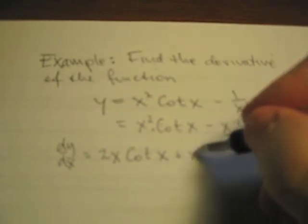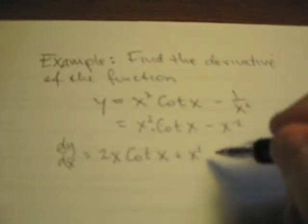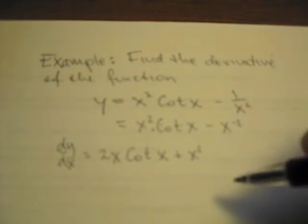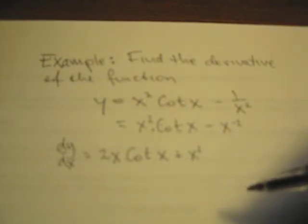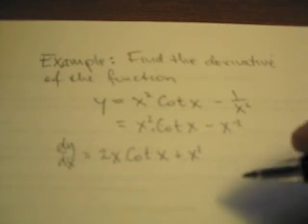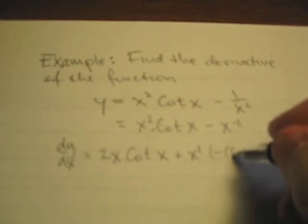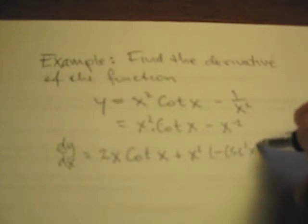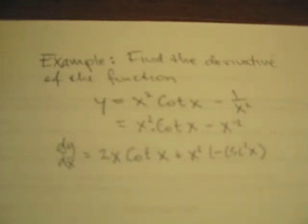plus the first function, which is x squared, by the derivative now of the cotangent of x. And the cotangent of x, of course, is going to be negative cosecant squared x. And you can find that on page 138 of the textbook where it gives you a list of the trigonometric derivatives.